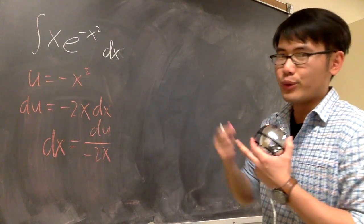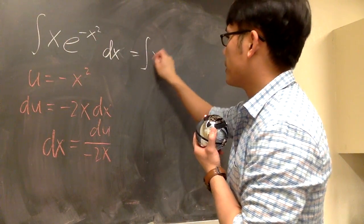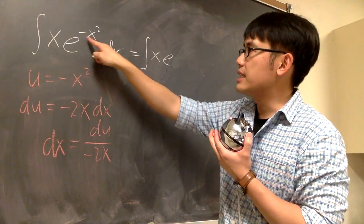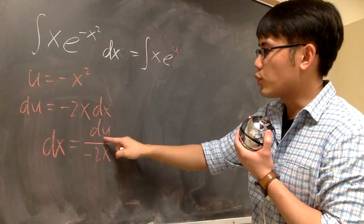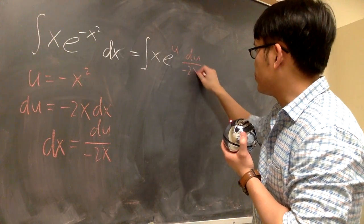So now we can take this integral into the u world. What do we get? This will be the same as the integral, the x will stay the same. And here we have e, and then the power right here is negative x squared, which is the same as u. So we have e to the u right here, and then dx is what we found to be du over negative 2x.